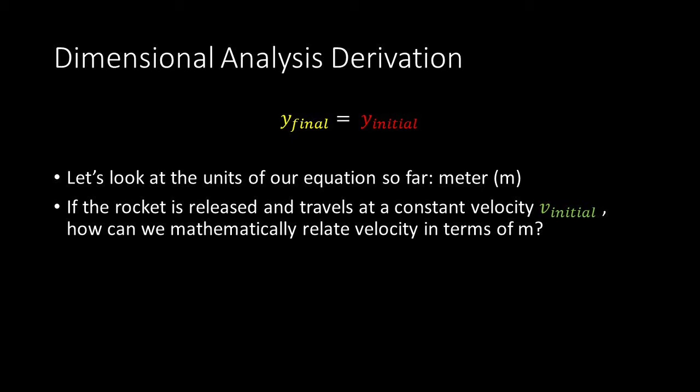If the rocket is released and travels at a constant velocity, v-initial, how can we mathematically relate the velocity in terms of meters? Well, we could state that the distance covered, m, is equal to the initial velocity times time. This is because meters per second times seconds gives us meters, which is a measure of distance.